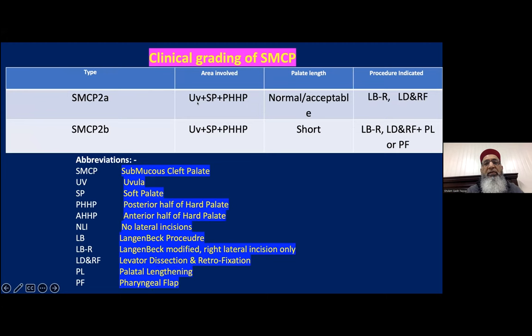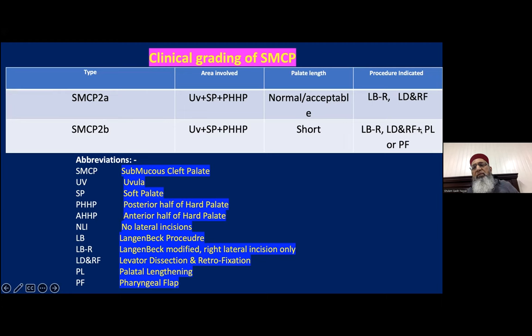Type 2A involves the uvula, soft palate, and posterior half of the hard palate with normal palate length. We perform VWK with incision only on the right side (a left-handed surgeon may use the left side), radical dissection of the greater palatine vessel on one side, levator dissection, and retrofixation. Type 2B is the same area with short palate — VWK with right-side incision, levator dissection, retrofixation, plus palatal lengthening if under 4 years, or pharyngeal flap if over 4 years.